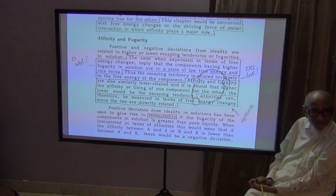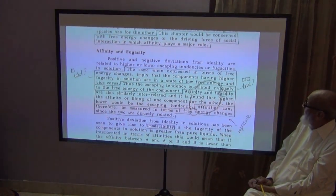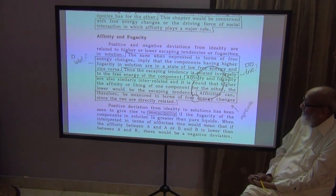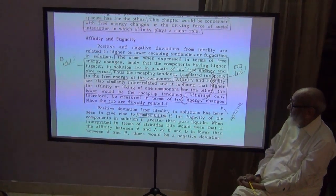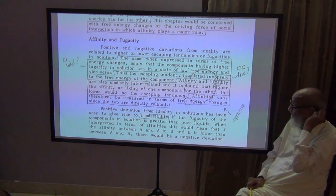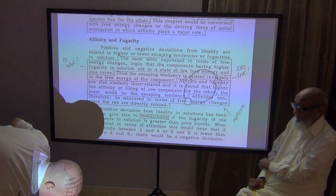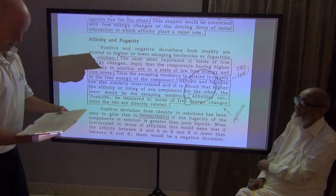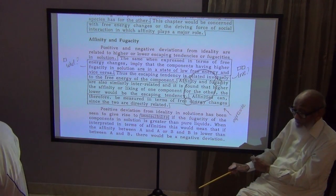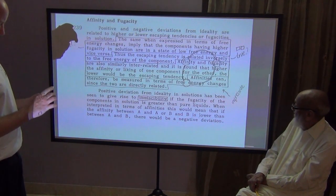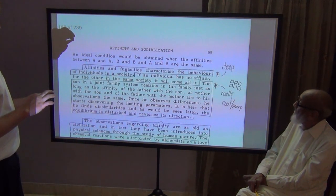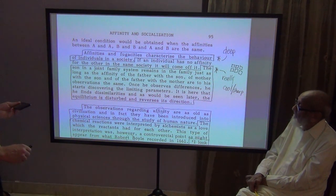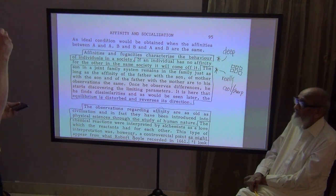All right. Let me switch back to the chapter here. So now, we talked about, we looked at all this right here. I think the diagram helped to explain the three concepts. So now we're going to go a little forward here. The affinities and fugacities characterize the behavior of individuals in society. I think we just looked at that in the diagram and I think that helps explain this sentence better.